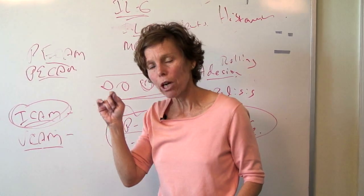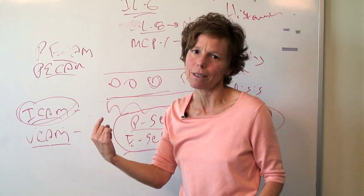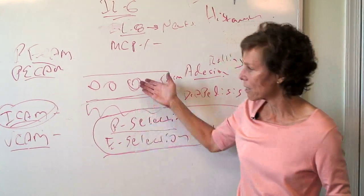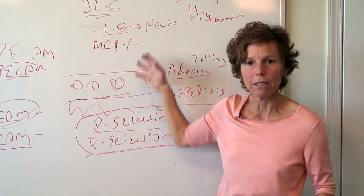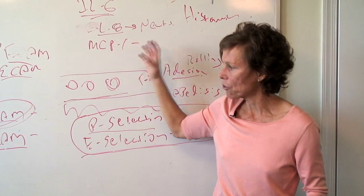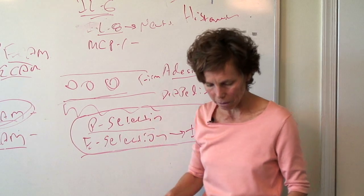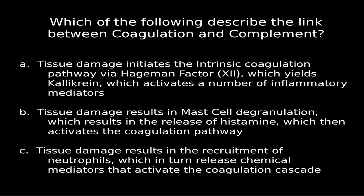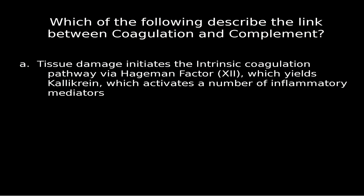Remember that the C1 inhibitor for complement also inhibits this process. So you can imagine, if you have a deficiency in that, you're going to get edema — because histamine is vasoactive, it creates this whole situation, and bradykinin is also vasoactive. Question two: which of the following describes the link between coagulation and complement? The answer is tissue damage initiates the intrinsic coagulation pathway — with factor 12 or Hageman factor — which yields kallikrein, which then activates a number of inflammatory mediators.